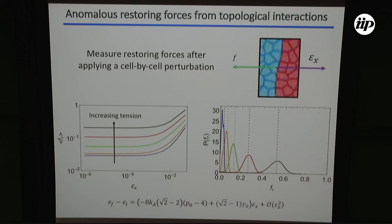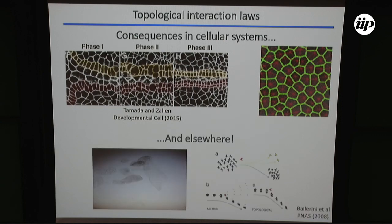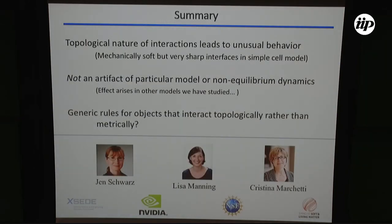We are currently working with experimental collaborators to understand whether this mechanism of interfacial sharpening is something particular cell types actually exploit. A suggestive image shows cells with lots of high-order vertices in places where cells need to compartmentalize. More broadly, in other systems where topological interactions have been speculated to be relevant, one might expect to see these unusual interfacial properties. With that, I thank my collaborators, funding, and you for your attention, and I'm happy to take questions.